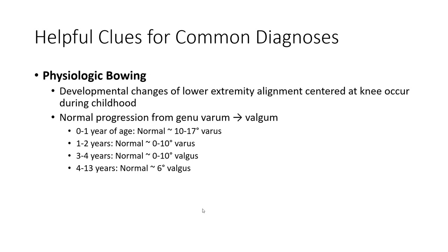Physiologic bowing: developmental change in lower extremity alignment centered at the knee occurs during childhood. Normal progression from genu varum to valgum. From birth to one year, normal is 10 to 17 degrees varus. One to two years, normal is 0 to 10 degrees varus. Three to four years, normal is 0 to 10 degrees valgus.